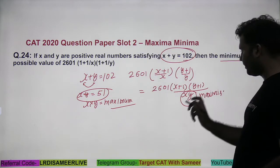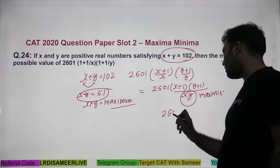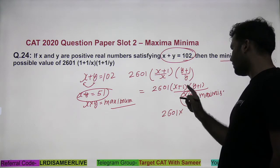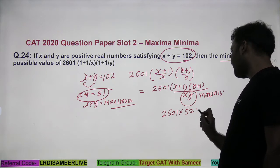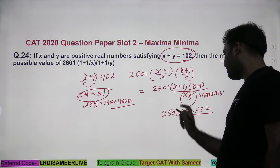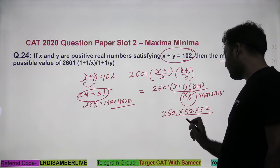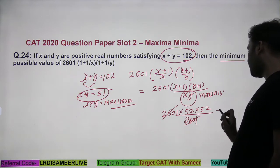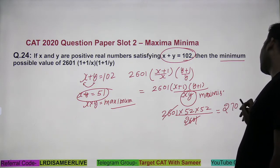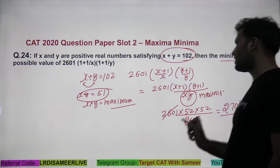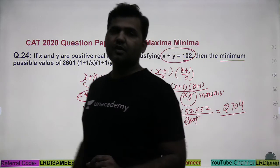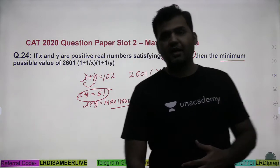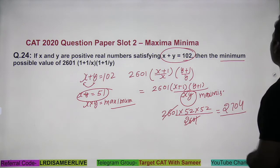So x into y will be maximum when x equals y equals 51. If I put x as 51, the whole expression becomes 2601 into (51+1)(51+1) divided by 51×51, which is 2601 into 52×52 divided by 2601. The 2601 cancels, leaving 52 into 52, which is 2704. That's the correct answer — a very simple question from the concept of maxima and minima in algebra.